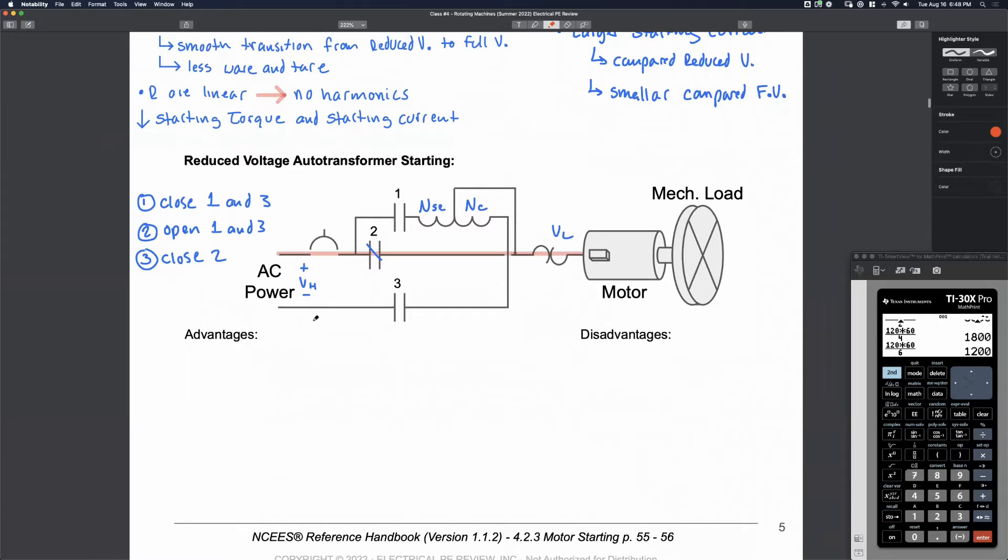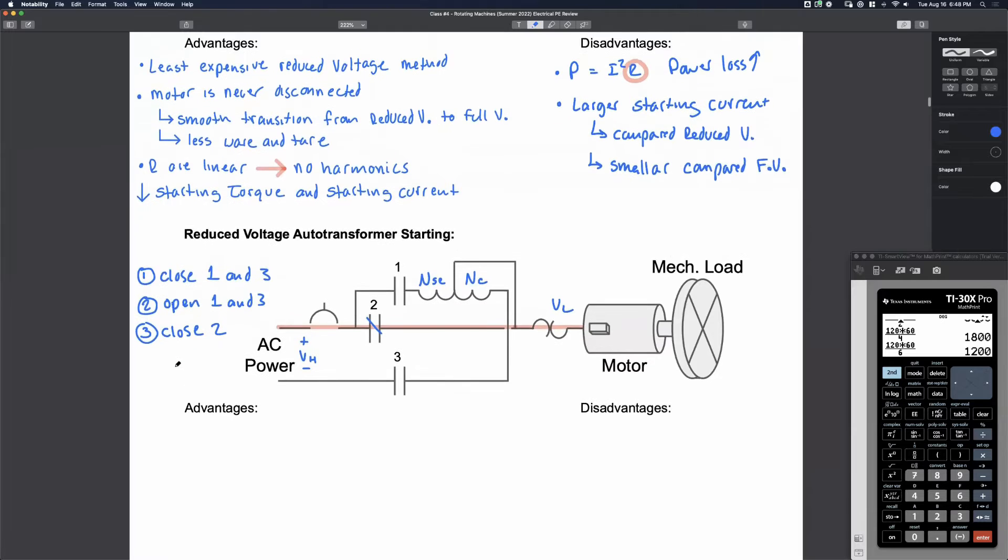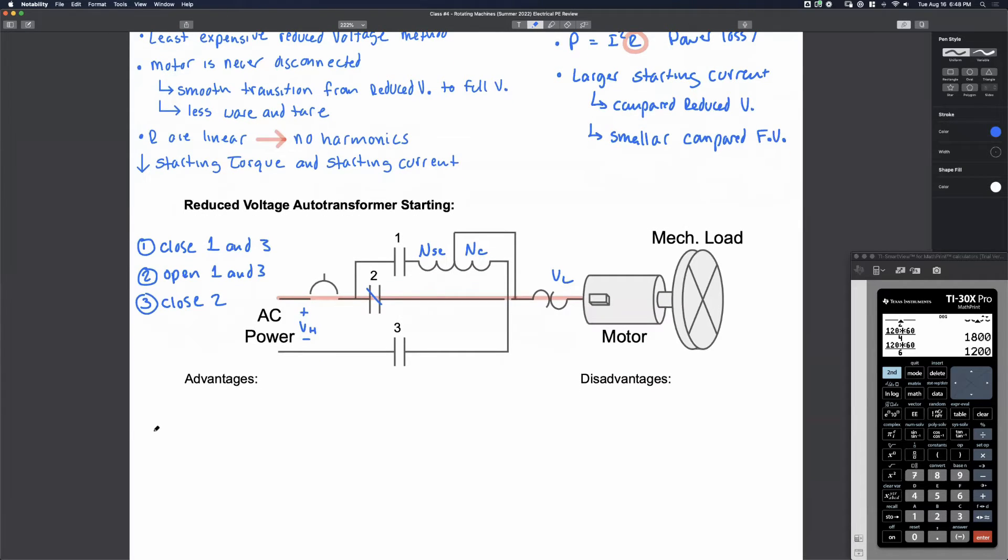Advantages of reduced voltage auto transformer starting. This time compared to the resistor starting, we've got even less starting torque and starting current. And typically auto transformers, you've got multiple taps here. Depending on where you physically connect to this node right here is going to change how much you step up or step down. So it's also typically more variable.